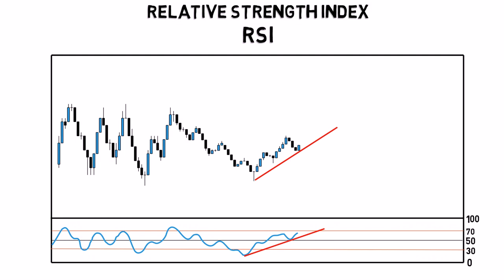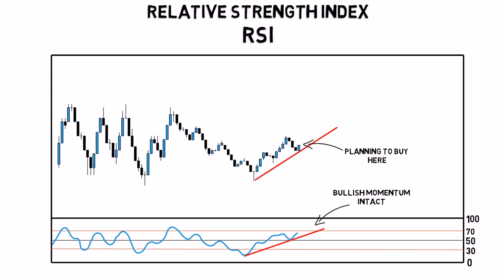The second way is to draw trend lines directly on the RSI to confirm the momentum of the price. For example, here we are planning to buy the bounce of the rising trend line. We see that the bullish momentum on the RSI is still intact, so it is an extra confirmation that our analysis is right.